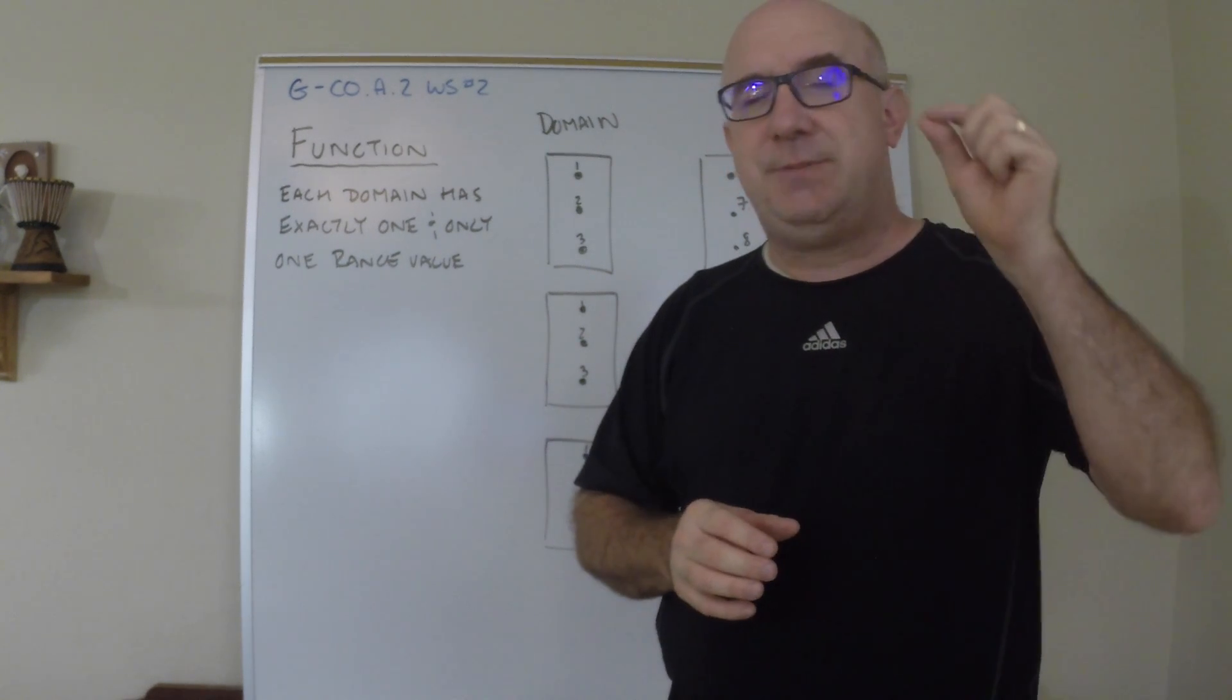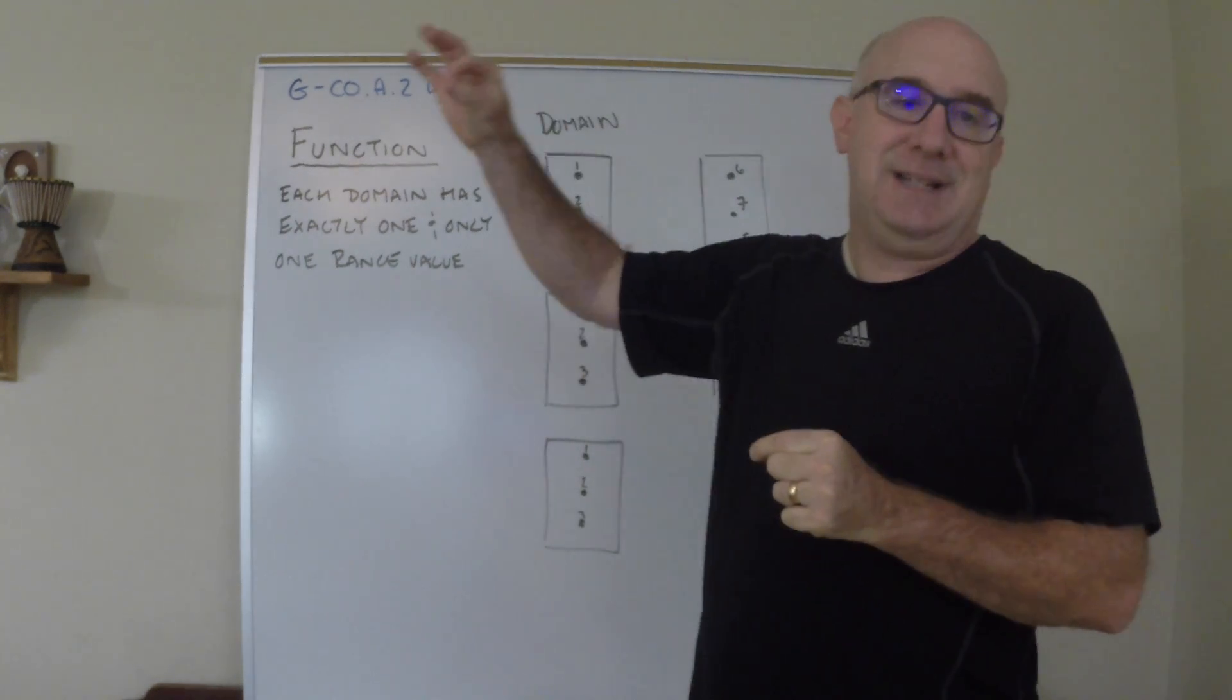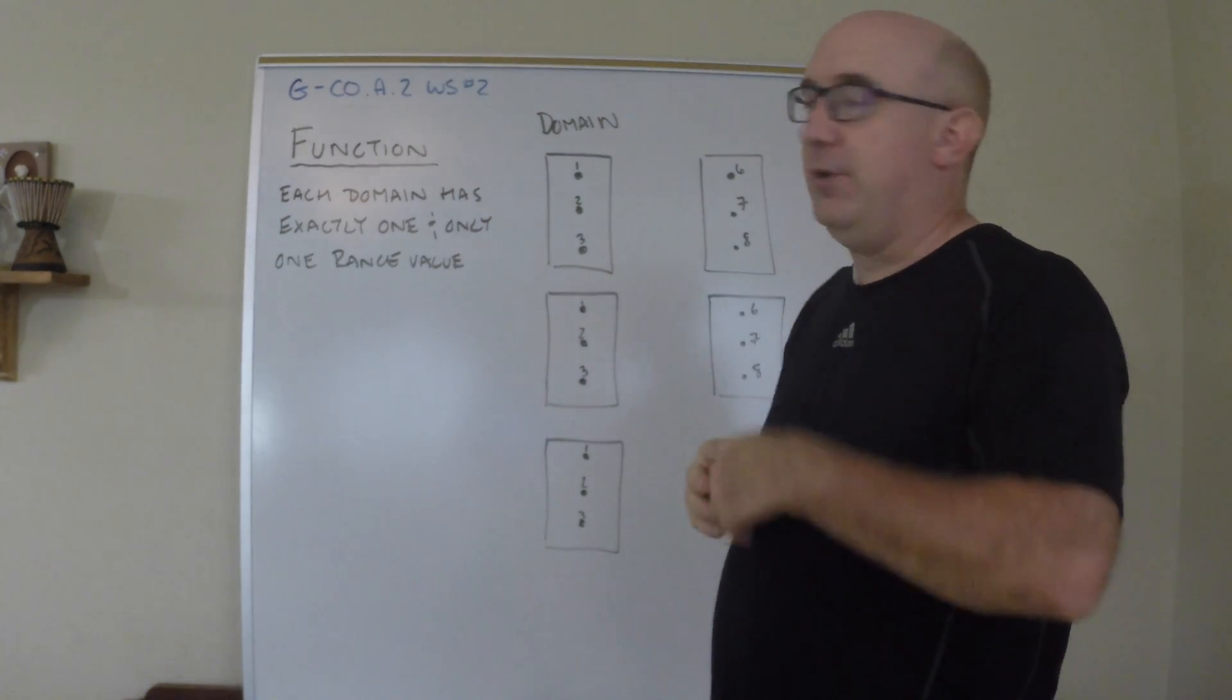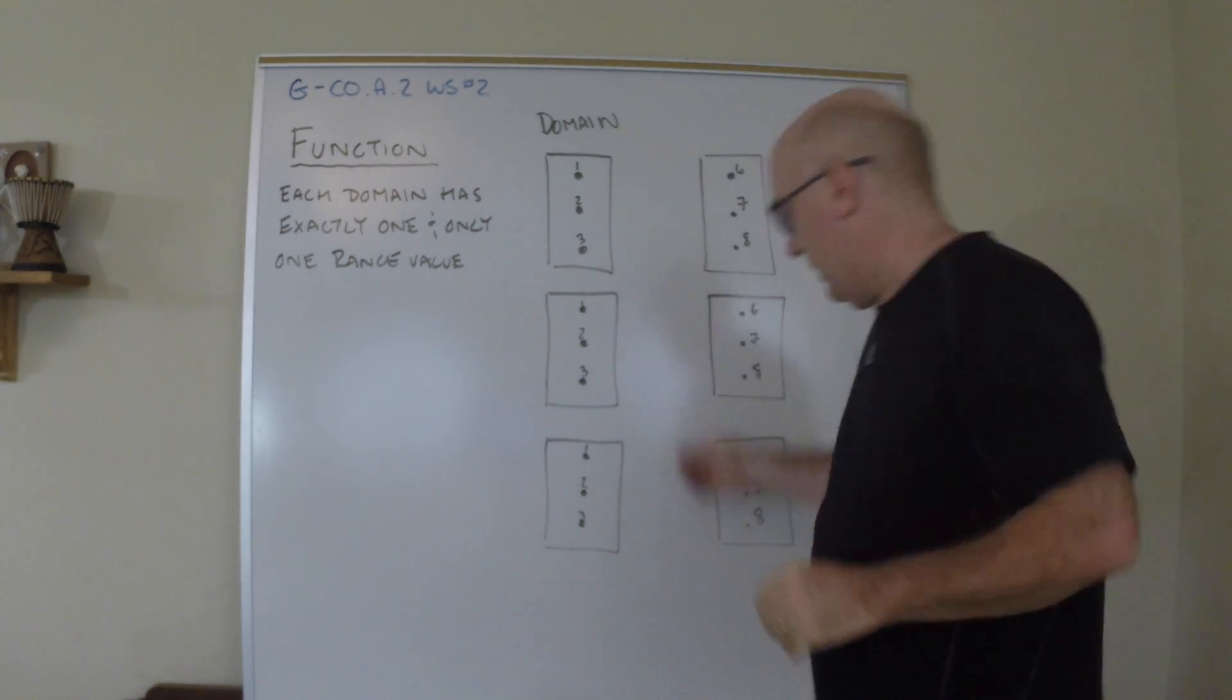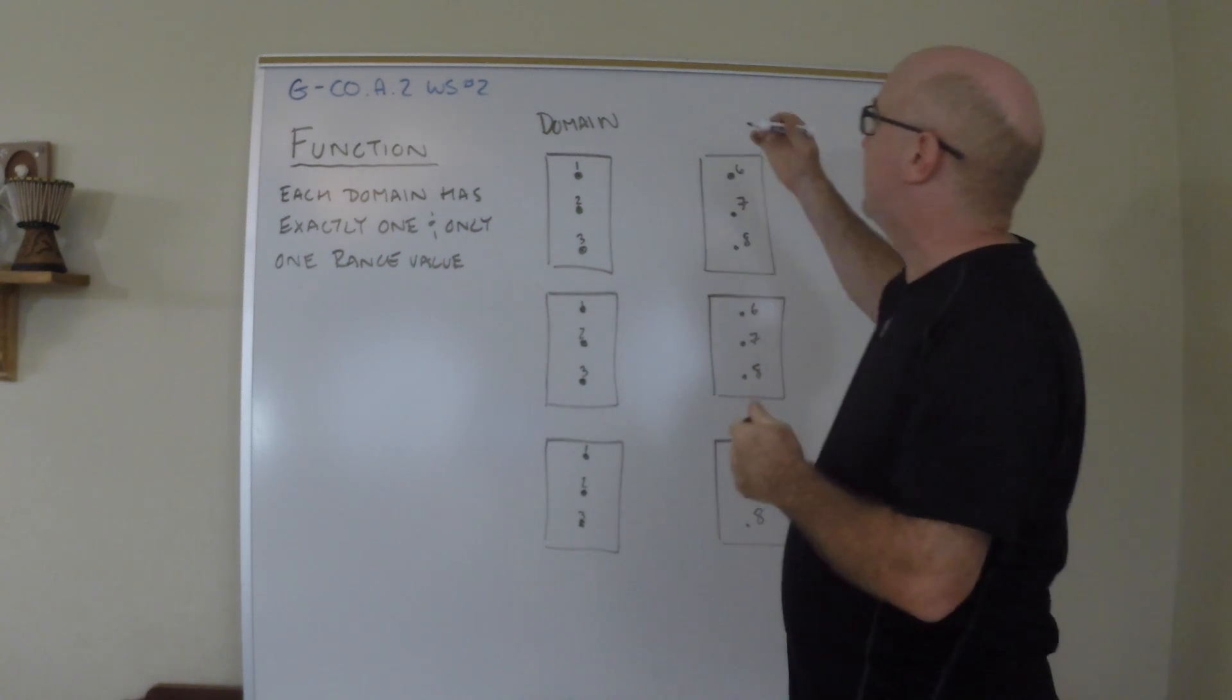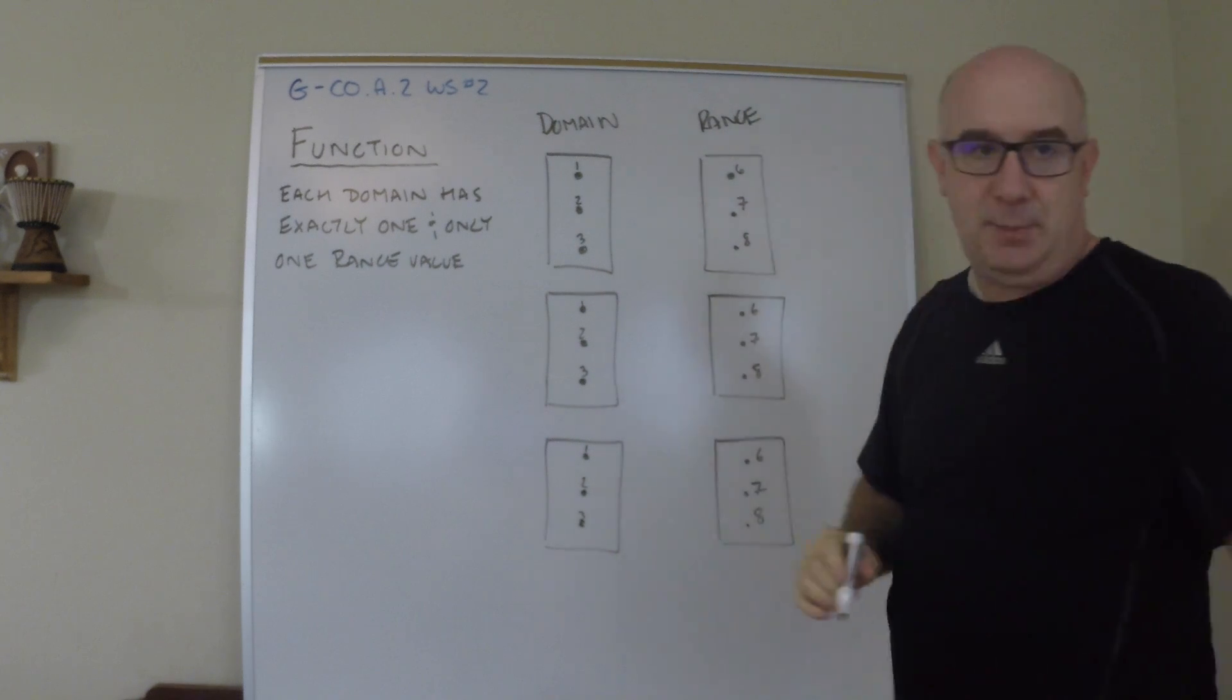But basically, for each member in the domain there is exactly one member in the range, or for each input there is an output. Now sometimes we diagram this using little diagrams like this, and so let me see if this can help us a little bit.